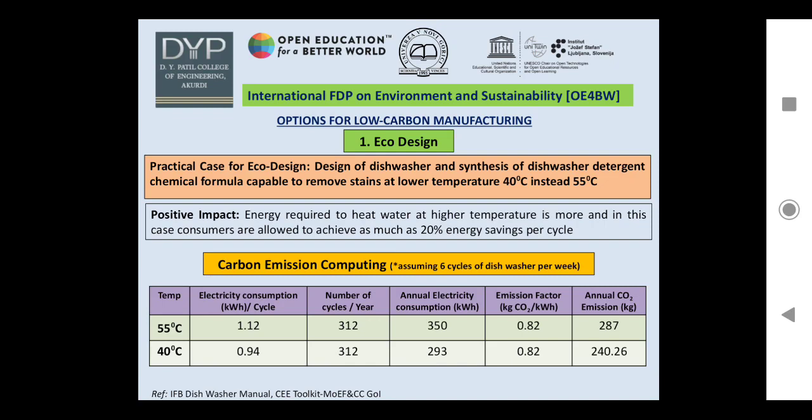The number of cycles per year is 312 (52 weeks multiplied by 6 cycles per week). Annual electricity consumption computed is 350 kWh at 55°C and 293 kWh at 40°C respectively. Using the emission factor per unit of electricity consumption, the annual CO₂ emission is 287 kg at 55°C and 240.26 kg at 40°C respectively.